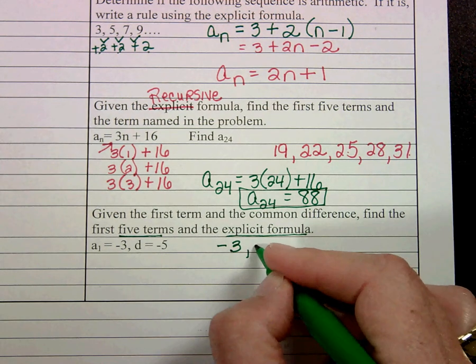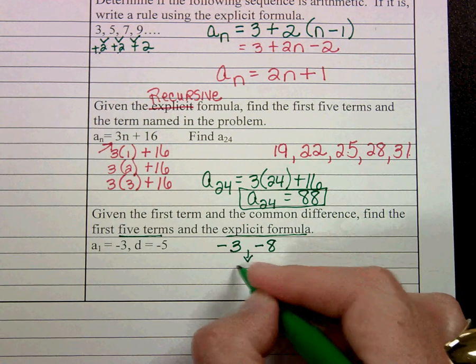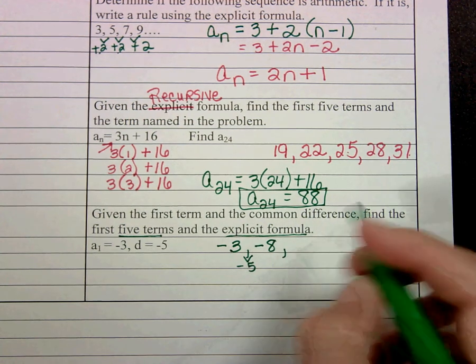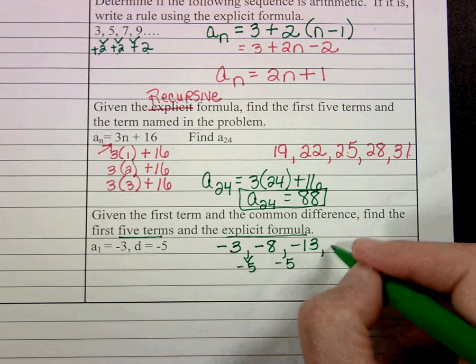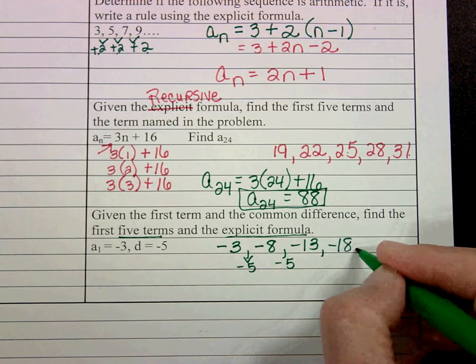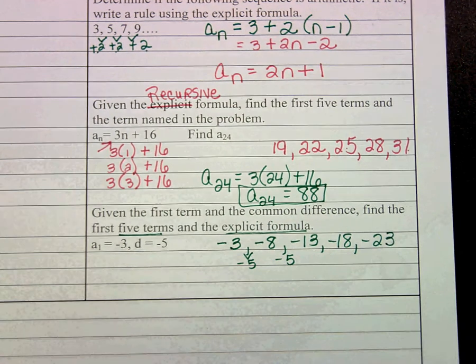So negative 3 minus 5 is negative 8. Just showing you that common difference. And then we would get negative 13, and then negative 18, and then negative 23. Really easy, right?